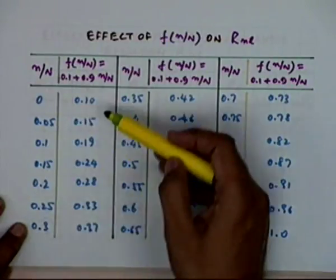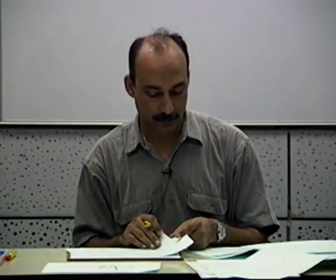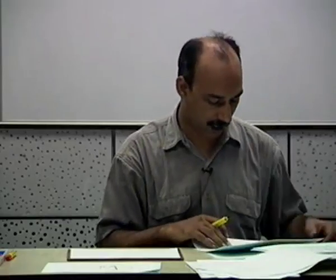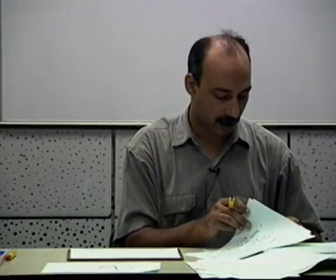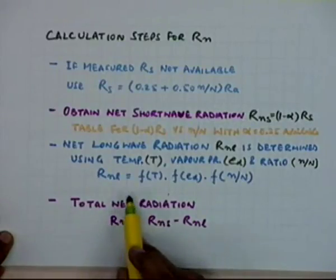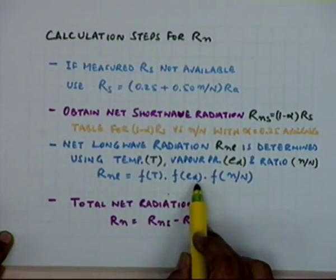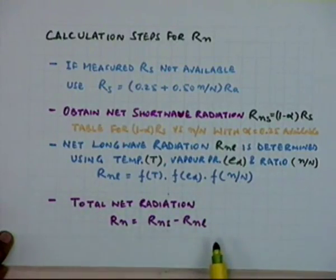Once you know the n/N ratio, the value can be read. Having obtained all three values — the factors deciding RnL — you can obtain the RnL value. Subsequently, you can find out the total net radiation. RnL is the factor dependent on temperature, the factor dependent on ed, and the factor dependent on n/N ratio. The total net radiation can now be obtained by knowing these two quantities.